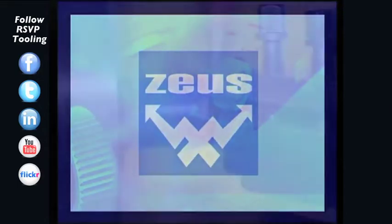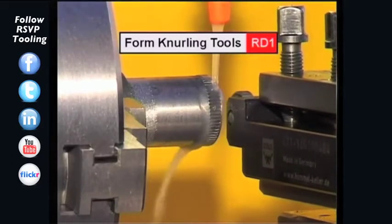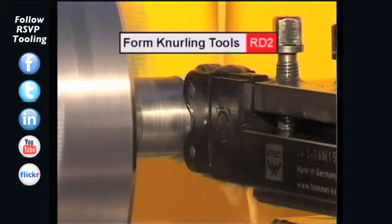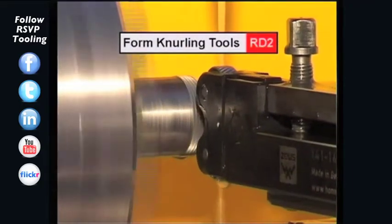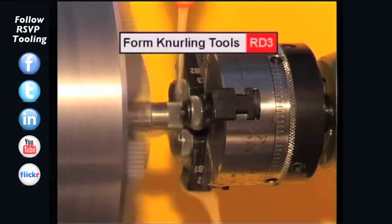The Zeus product program comprises of the tool series RD1, knurling tools with one knurling wheel, RD2, knurling tools with two knurling wheels, and RD3, knurling tools with three knurling wheels.